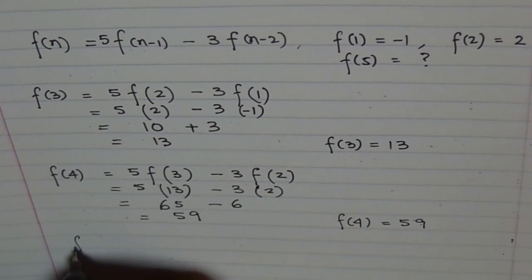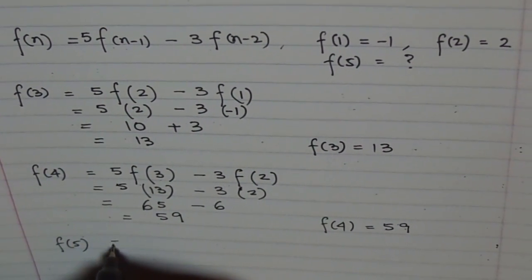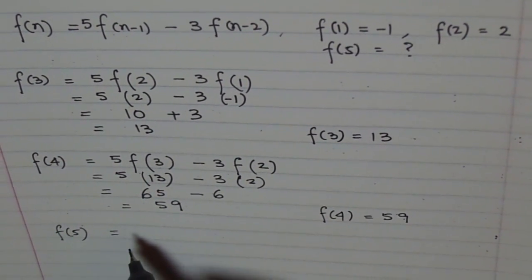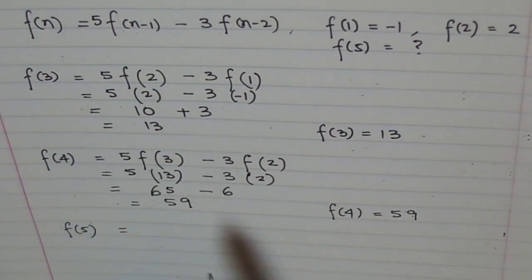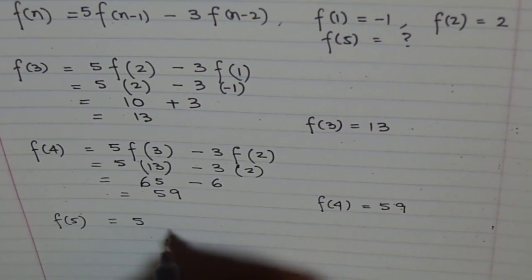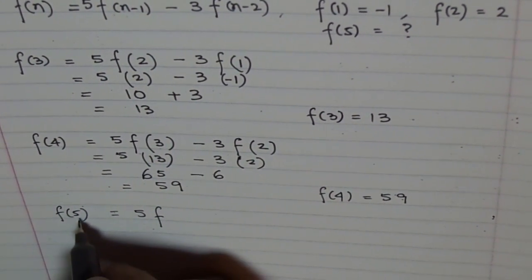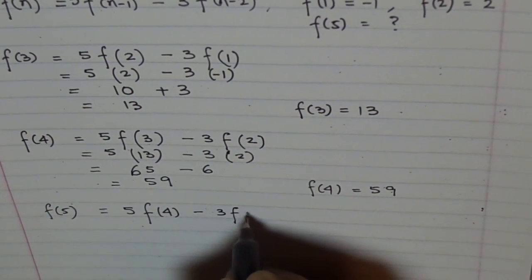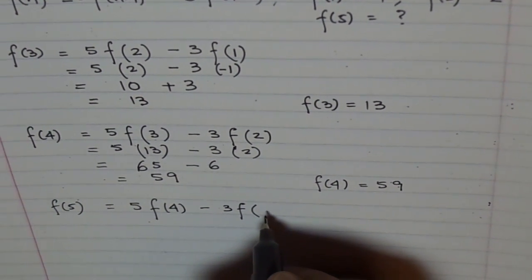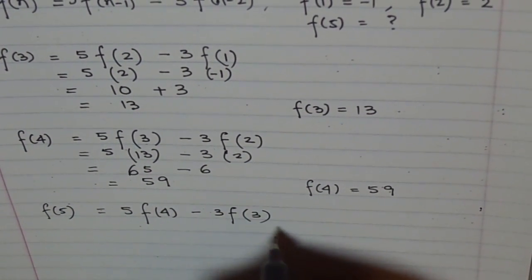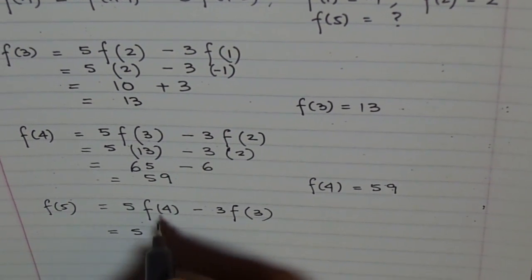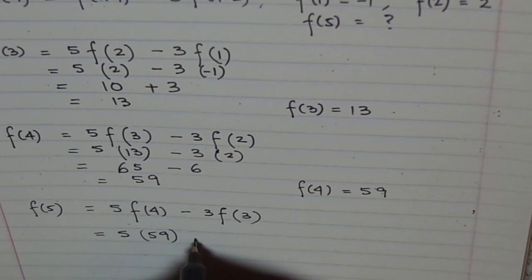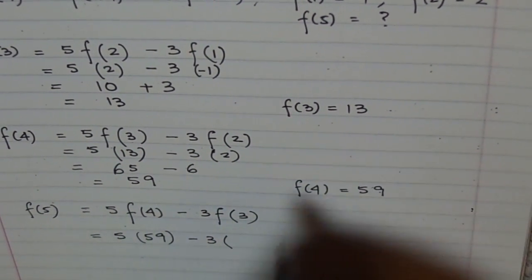Let's find f(5). We'll use the values of f(4) and f(3) to find f(5) using our given equation. In function notation, 5 times f(5-1), which is 4, minus 3 times f(5-2), which is 3. Equals 5 times f(4), which is 59, minus 3 times f(3), which is 13.